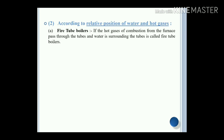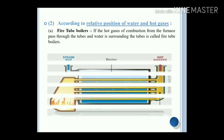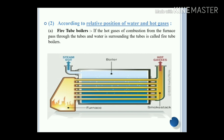According to the relative position of water and hot gases — fire tube boilers: if the hot gases of combustion from the furnace pass through the tubes and water surrounds the tubes, it is called a fire tube boiler. In simple terms, if hot gases are inside the tubes, that kind of boiler is said to be a fire tube boiler, and the surrounding portion of that pipe will be water.